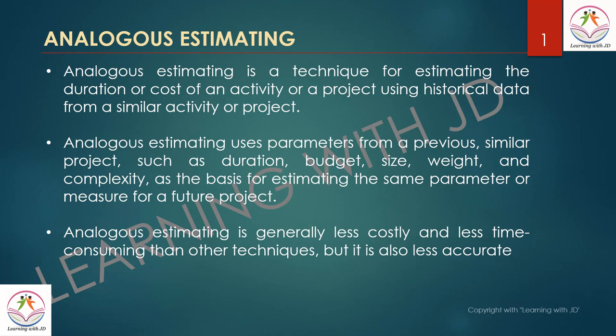Analogous estimating is a technique for estimating the duration or cost of an activity or a project using historical data from a similar activity or project. If such an activity happened previously and took say seven days, you would estimate plus or minus around that figure. Analogous estimating uses parameters from the previous similar project — such as duration, budget, size, complexity, and weight — as the basis for estimating the same parameter for a future project.